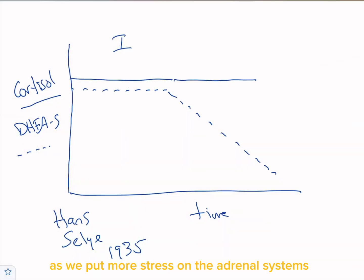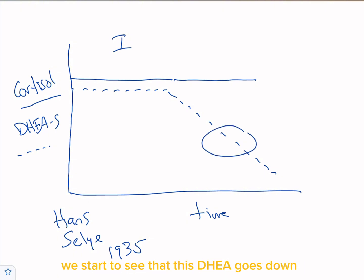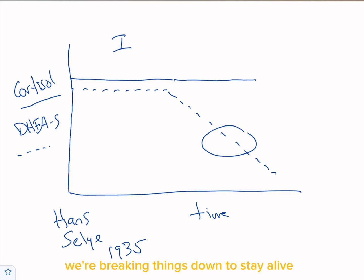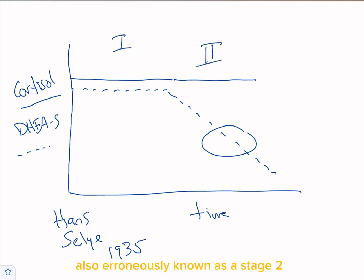Over time, as we put more stress on the adrenal systems, DHEAS goes down. We're no longer building tissues, no longer healing or repairing ourselves — we're breaking things down to stay alive. This is the adaptive stage, also erroneously known as stage two adrenal fatigue.